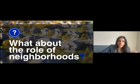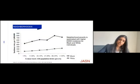What about the role of neighborhoods? Poverty has significant association with end-stage kidney disease, with more potent effects for Black versus white individuals.